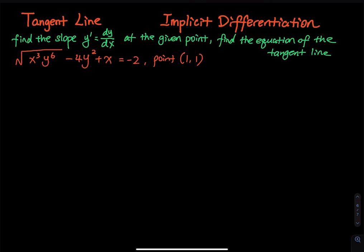This is a tangent line problem using implicit differentiation. First I would like to find the slope y', which is dy/dx of the given equation. We have an equation and I would like to differentiate both sides using implicit differentiation, so at the end I will have a y', which stands for the slope of this function at any x value. Then I give you a point, you plug it in to find the slope, and we use the point and slope to build the tangent line.